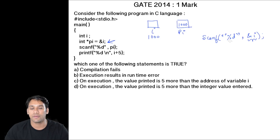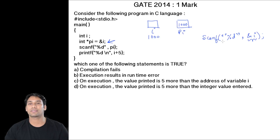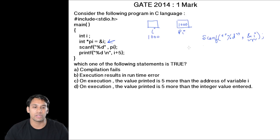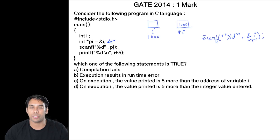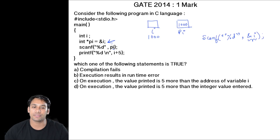Whenever we do a scanf statement we pass the address of the variables. Here we are doing scanf("%d", pi), and pi is a pointer which is pointing to a variable — the value stored by pi is an address. So in this scanf statement, pi will pass the address of i.